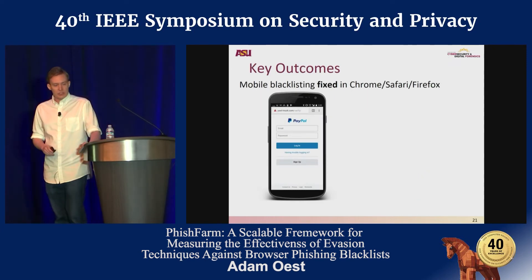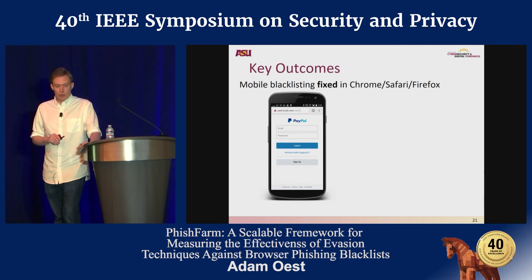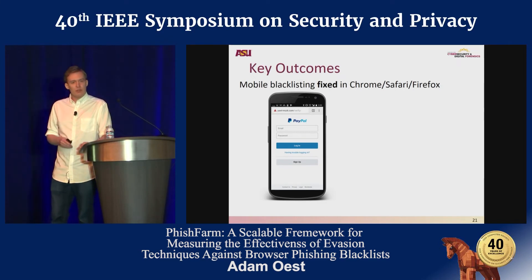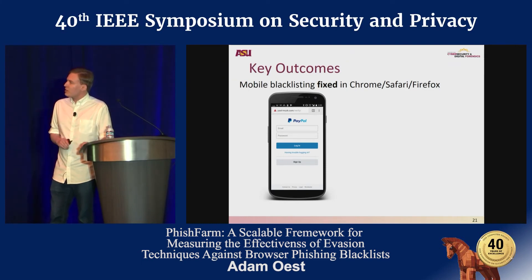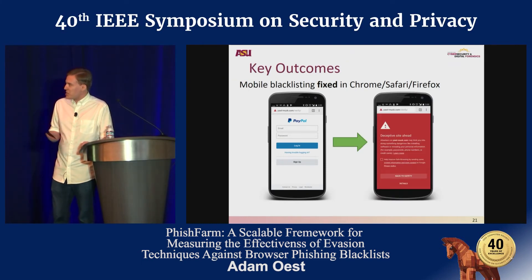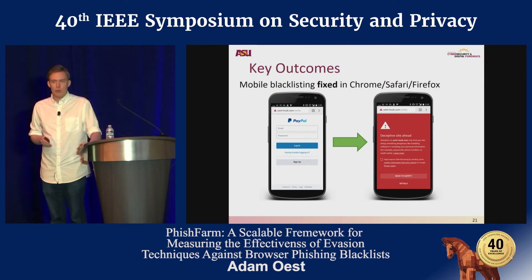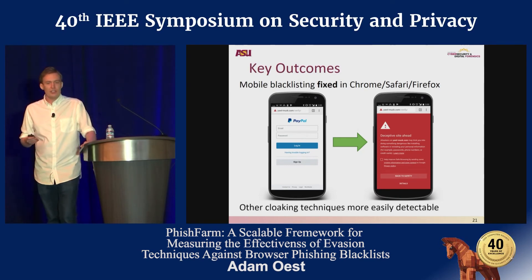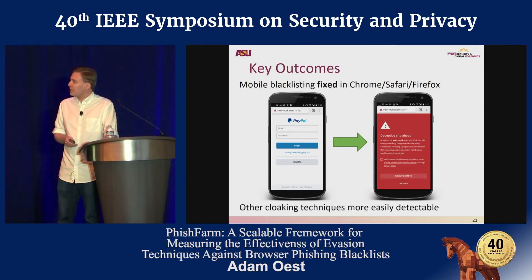A key outcome of this research is that following our disclosure to Google, we were actually able to address the mobile blacklisting issue. Before September 2018, if you visited a known phishing site on mobile, you would see the real login page — no warning. But now you should be seeing the warning correctly. Other cloaking techniques that we looked at are now more easily detectable.